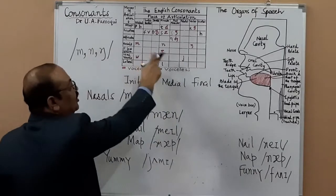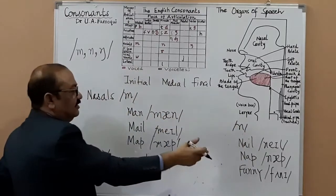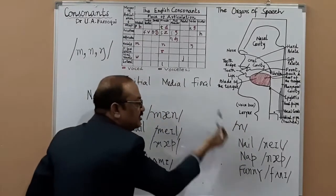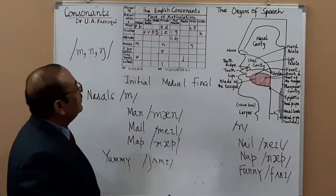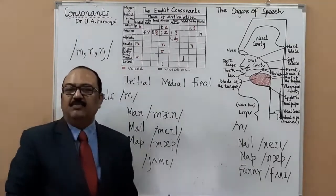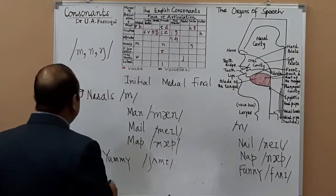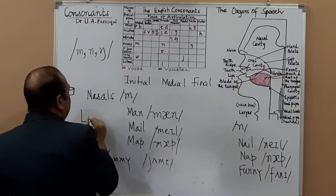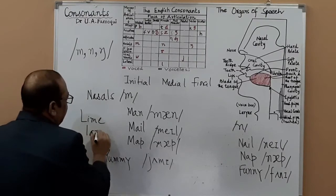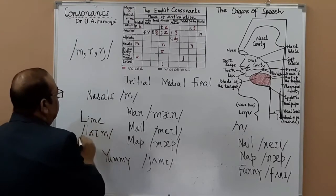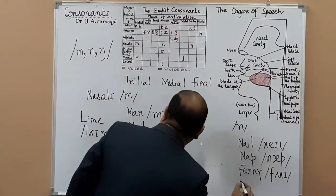We are completing /m/ as well as /n/ together. I have given two examples with the initial sound and one with the medial occurrence. Now finally — where do you have /m/ finally? Like 'lime' — lime water, lemonade. This is how you write 'lime'.